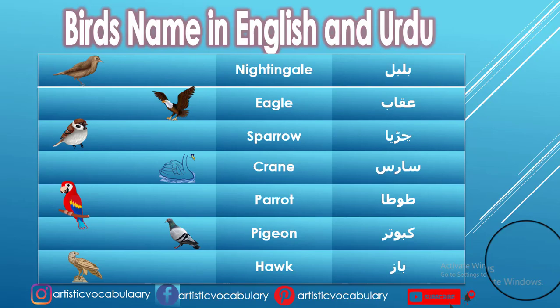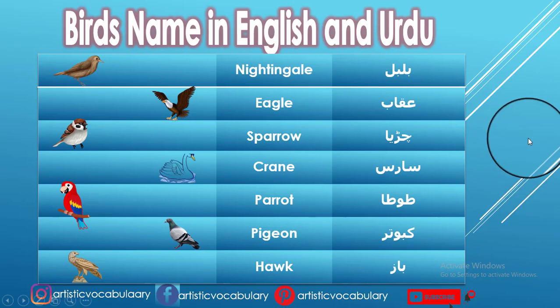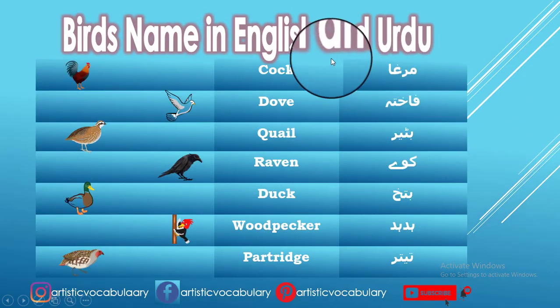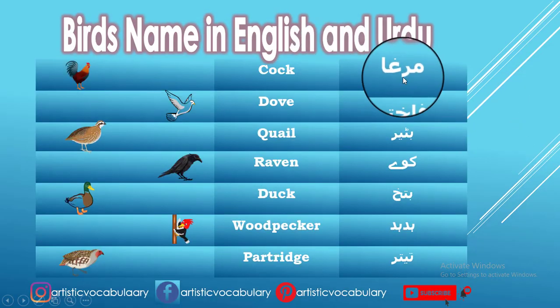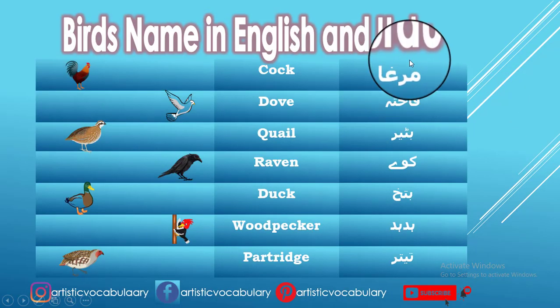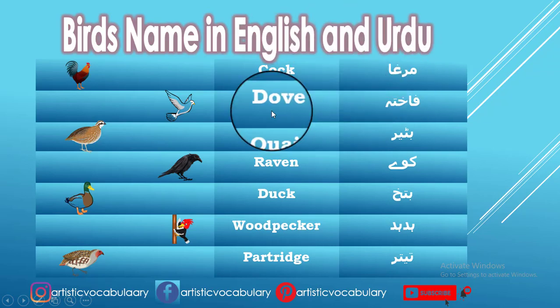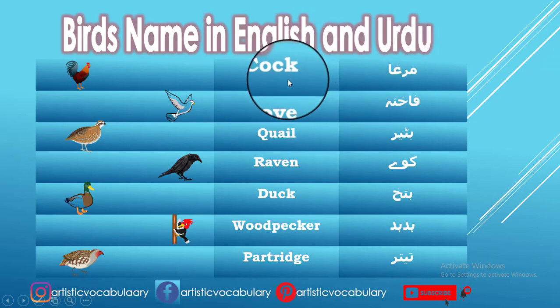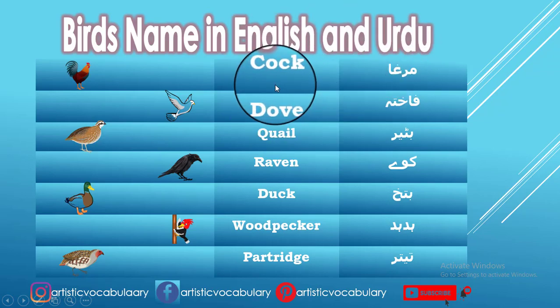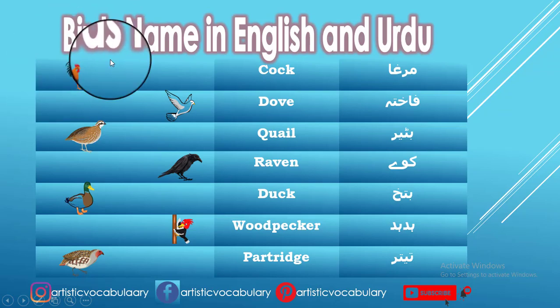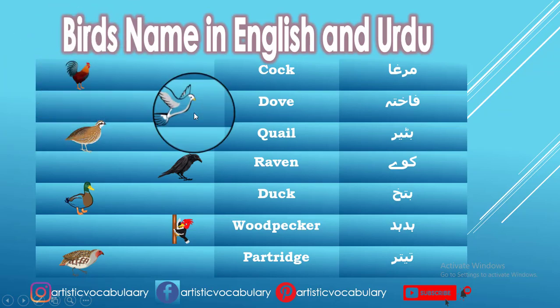Baaz — in English we call it Hawk. Murgha — in English we call it Cock.